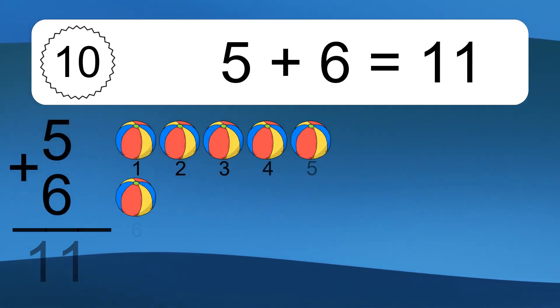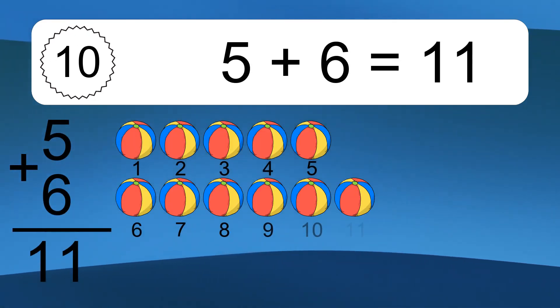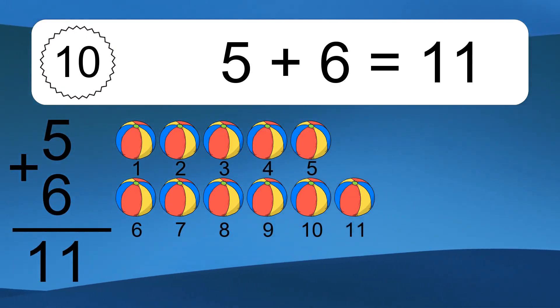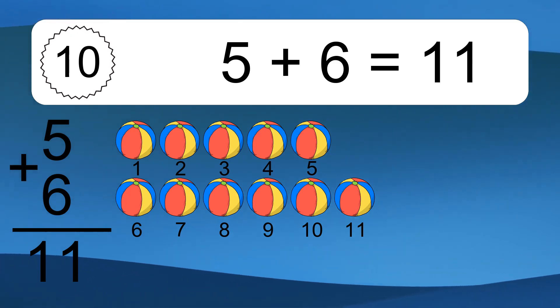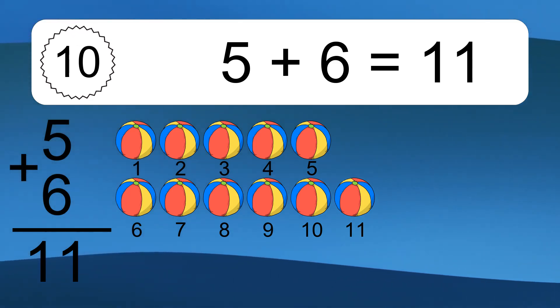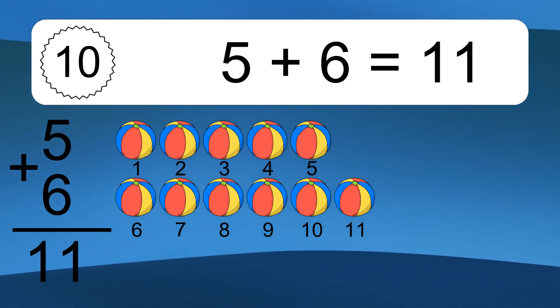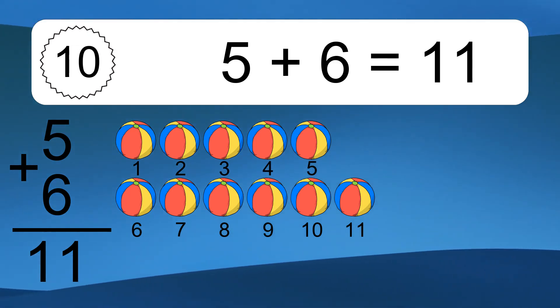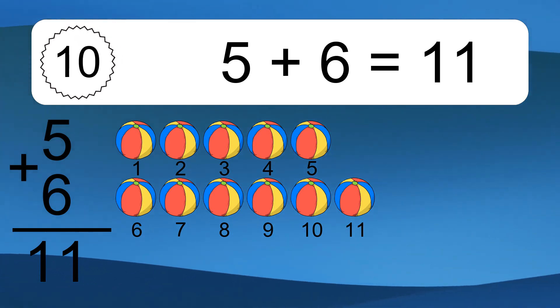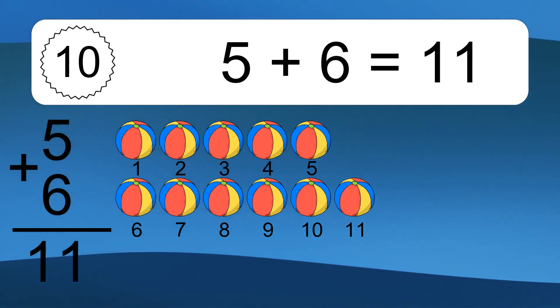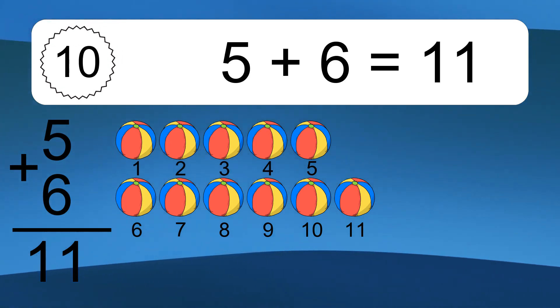Five plus six equals what? Five plus six equals eleven. Let's count it: one, two, three, four, five, six, seven, eight, nine, ten, eleven.